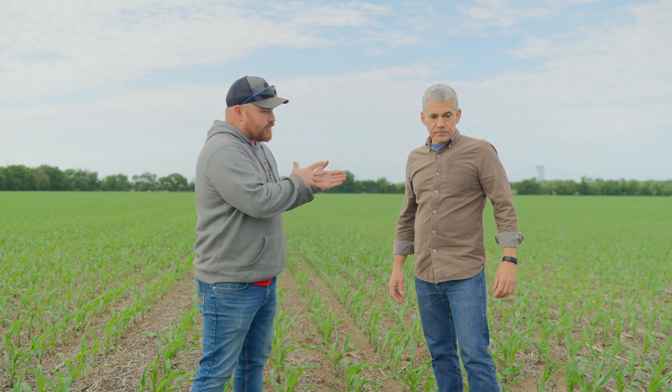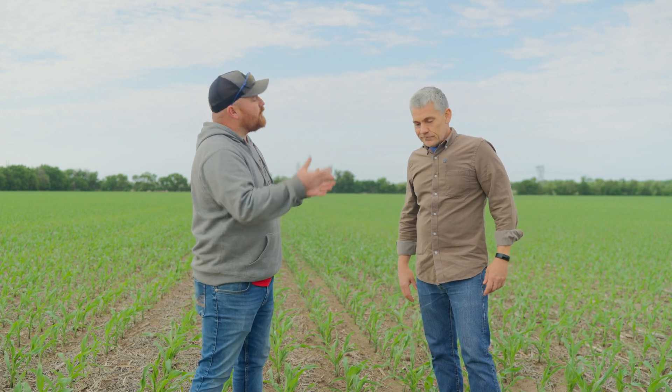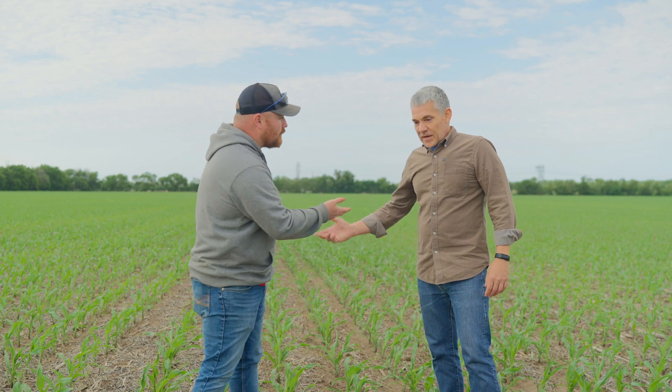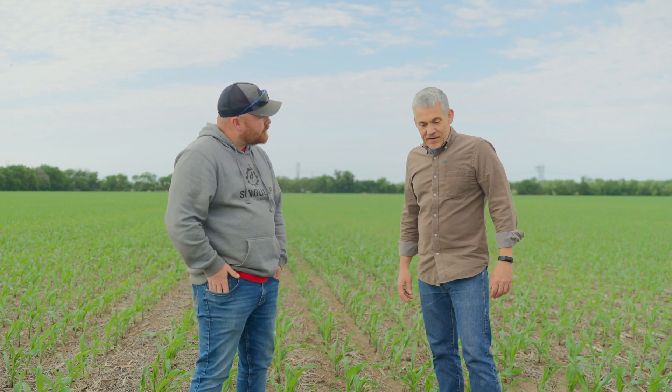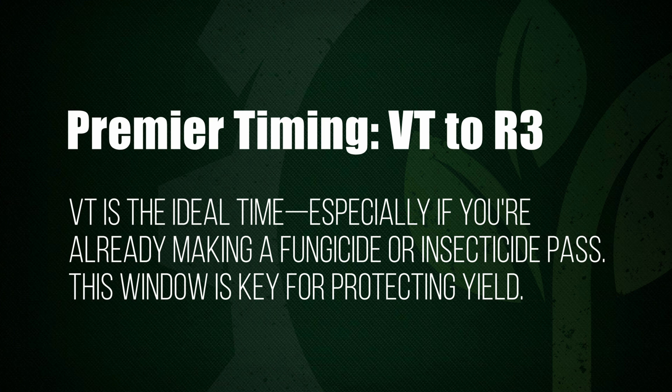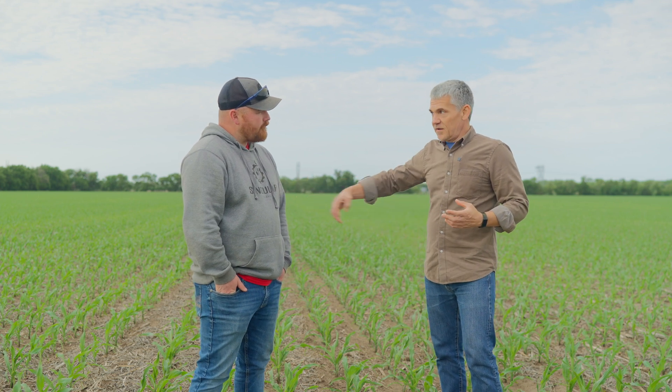The primary timing recommendation would be VT through R3–R4, but if you're going to do it, hit it at VT — because you know you may be going across that field with a fungicide, or even possibly an insecticide if you have problems like mites late in the season. VT is a really good time to target it in US farms and US environments. It's going to work later, and in South America they're spraying corn and bean plants much later than we are. But given our market, our agronomic practices, and those fungicide passes and logistics, the fungicide application is a perfect timing to add this hormone package to.